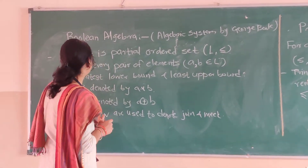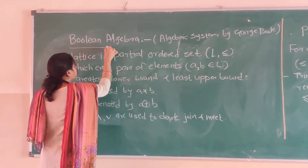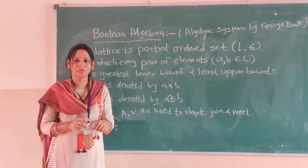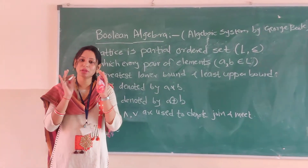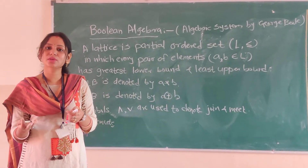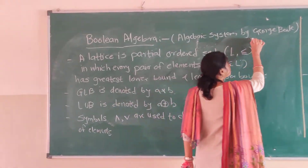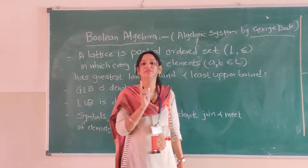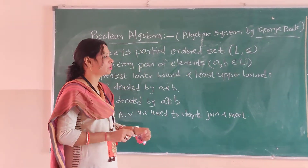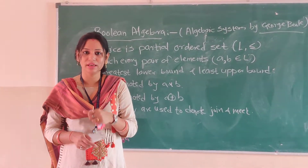In this section we will see what is Boolean algebra and principle of duality. Boolean algebra is nothing but an algebraic system. It is called Boolean algebra because it was invented by George Moore in 1854, who discovered this concept of the algebraic system. That is why algebraic system is also called as Boolean algebra.